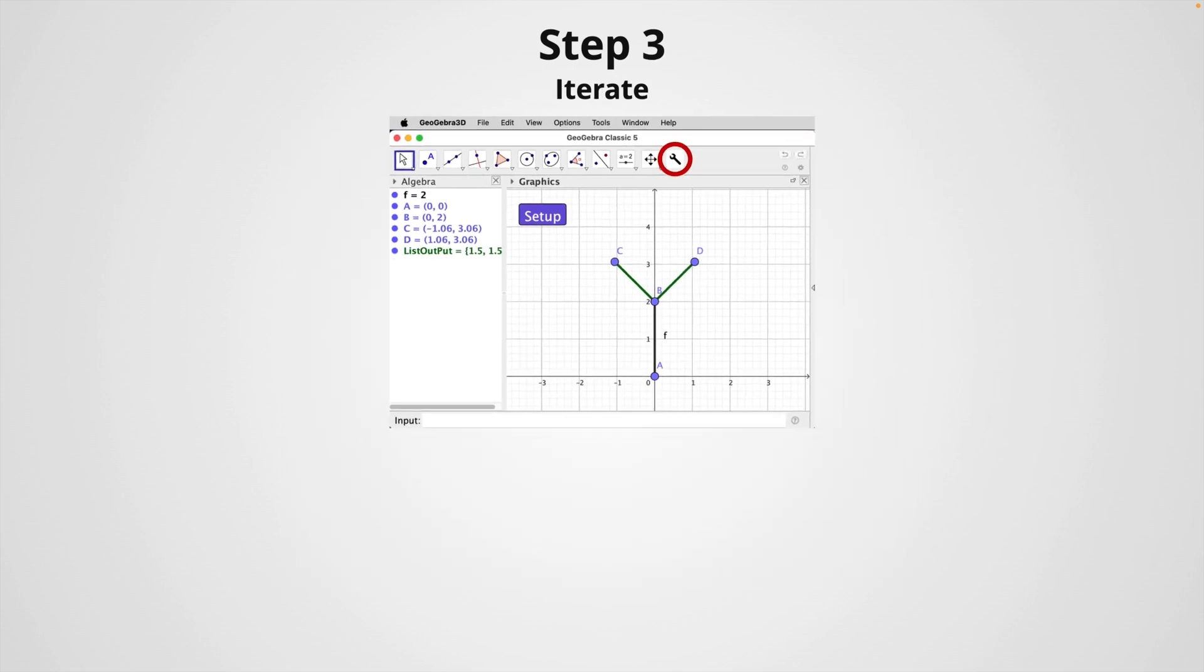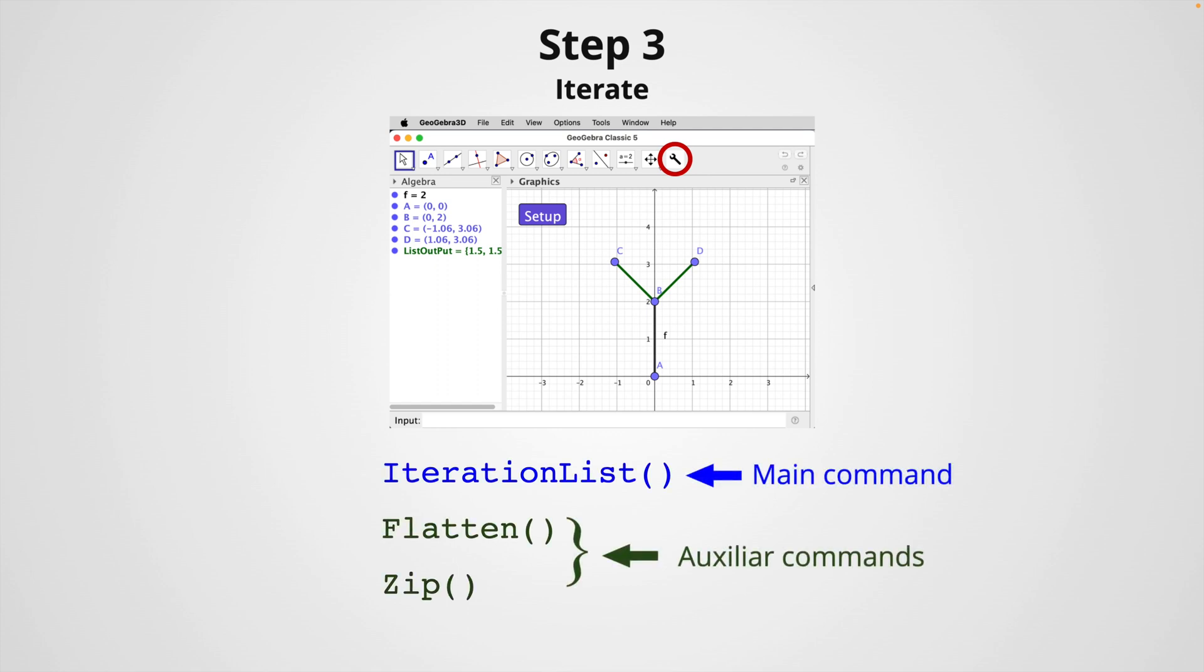Now in our step number three, we're going to apply our iteration. Now that we have our personalized tool named Grow, we can use it in combination with other GeoGebra commands to create our fractal tree. First of all, we have the iteration list command, and then the flatten command, and finally the zip command.